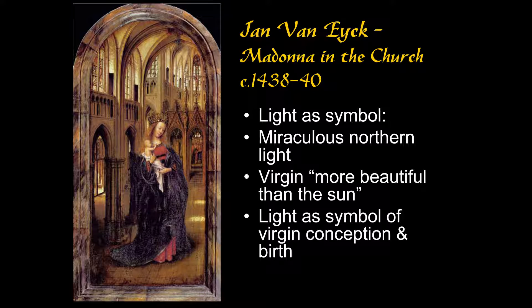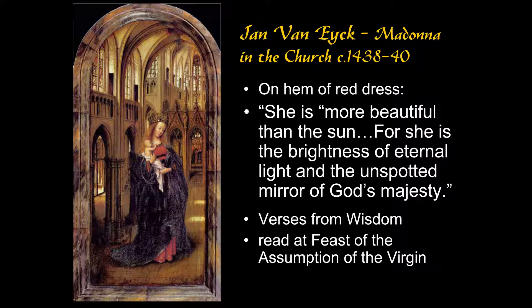In the case of the Virgin Mary, light also serves as a symbol of the virgin conception of Christ and the virgin birth. Mary is compared to the sun — she's often considered the woman clothed in the sun from the Apocalypse. And just to show we're not making this up, there's an inscription on the hem of her red dress in gold letters as though it were embroidered, in Latin. The translation reads: 'She is more beautiful than the sun, for she is the brightness of eternal light and the unspotted mirror of God's majesty.'